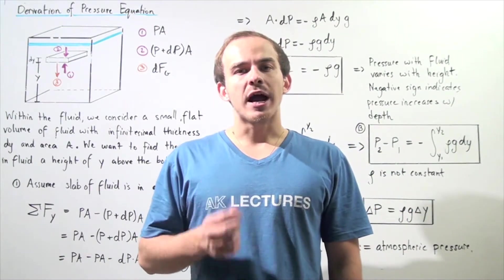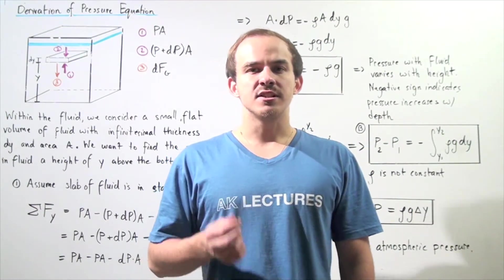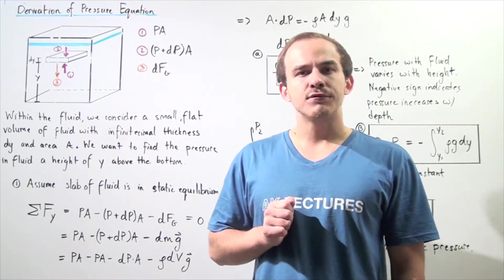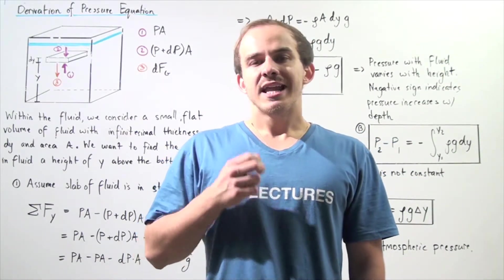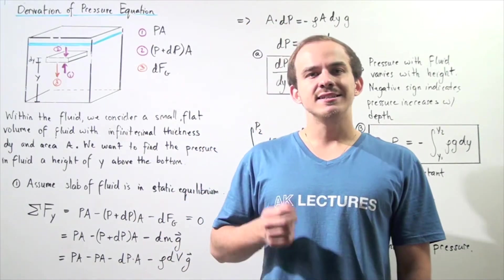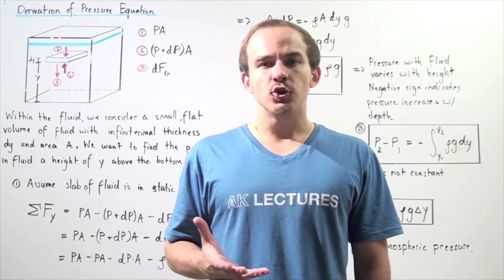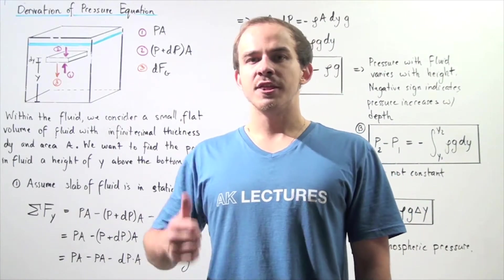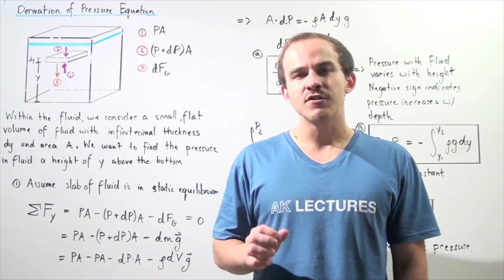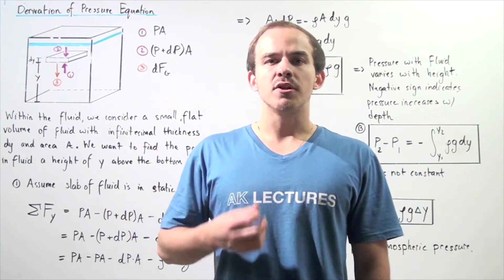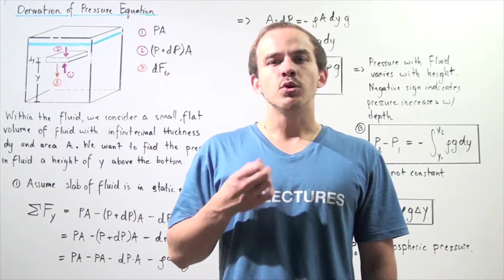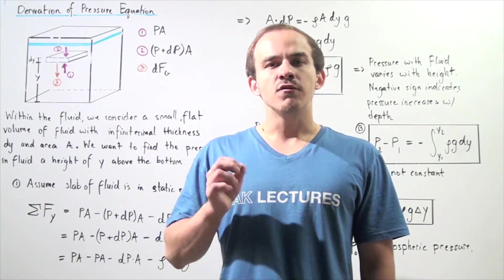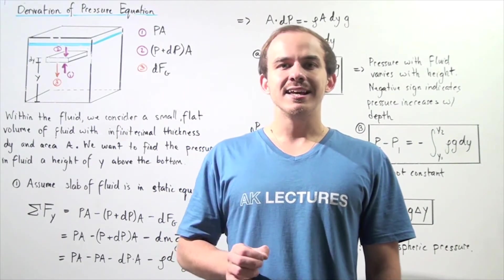In the previous lecture, we derived an equation that gives us the pressure within a fluid when the density of that fluid is constant. Now, what happens when the density is not constant? We can't use that equation — we have to use a different one. In this lecture, we're going to derive the general form of the pressure equation that will give us the pressure within the fluid, regardless of whether or not the density is constant.